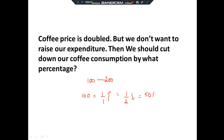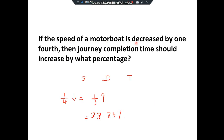If the speed of a motorboat is decreased by one-fourth, then journey completion time should increase by what percentage. Speed = distance/time. Decreased by 1/4 of 100% = 25%, so just write 1/4 decrease. Keep numerator 1; subtract: 4−1=3. So 1/3 increase = 33.33%. The journey time must increase by 33.33%.